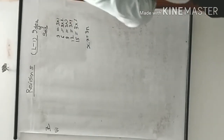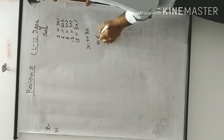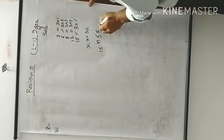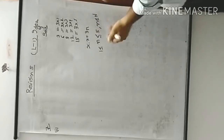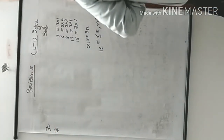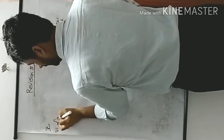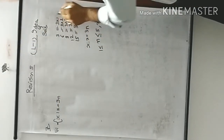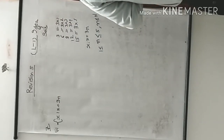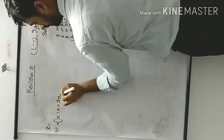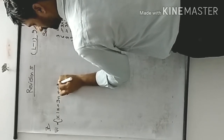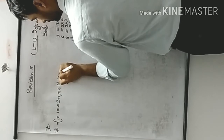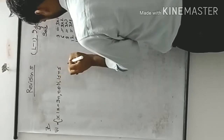So the set builder form is: {x : x = 3n, n ∈ N, 1 ≤ n ≤ 5}. Whenever elements are given, you have to find the criteria which connects all the elements.